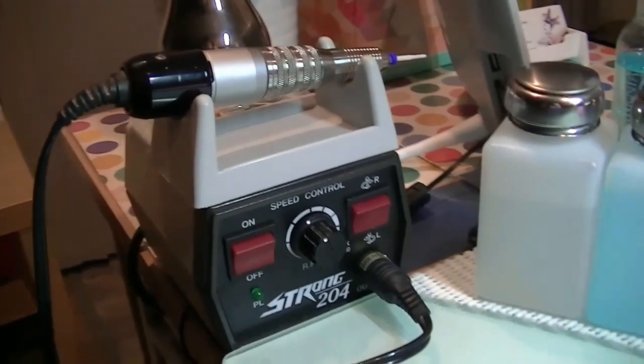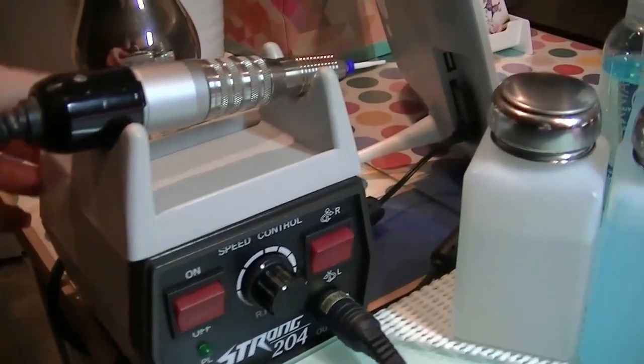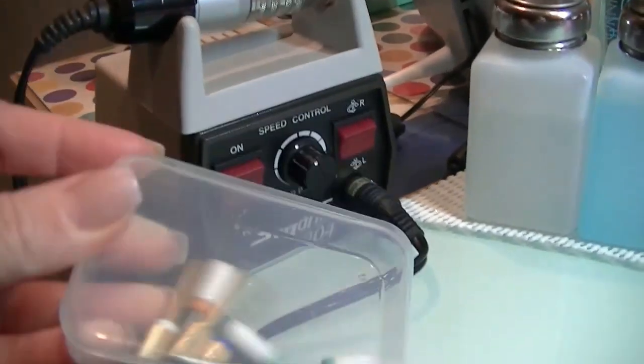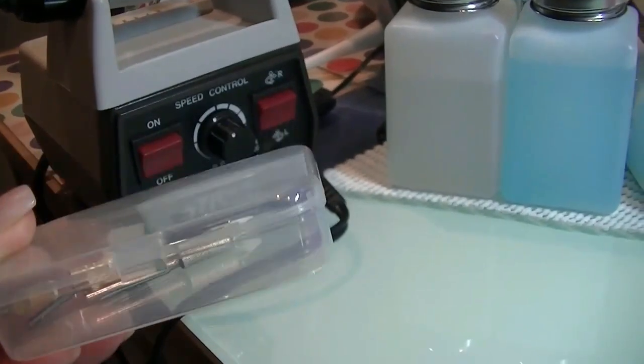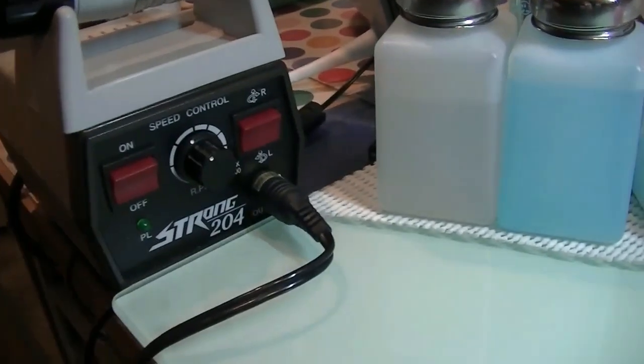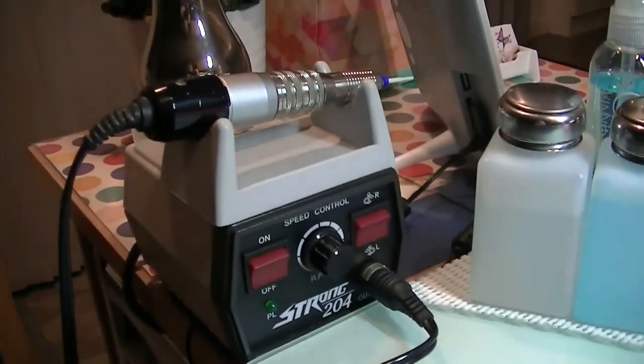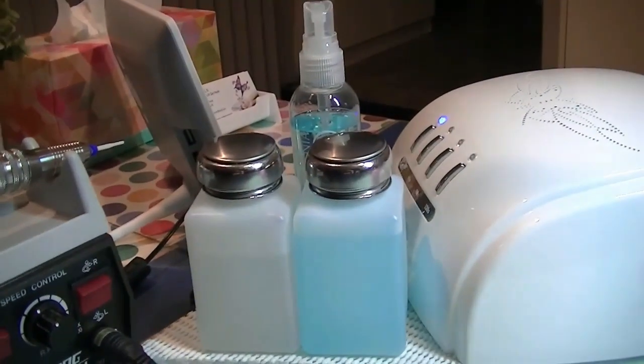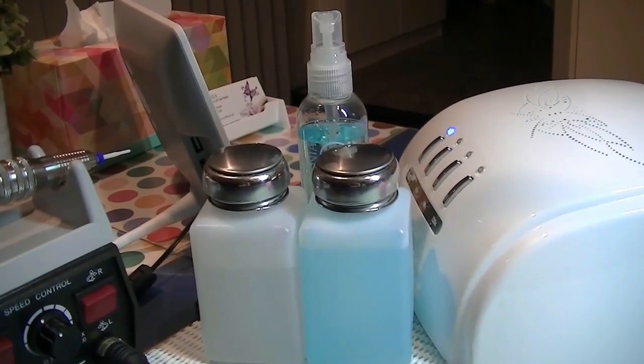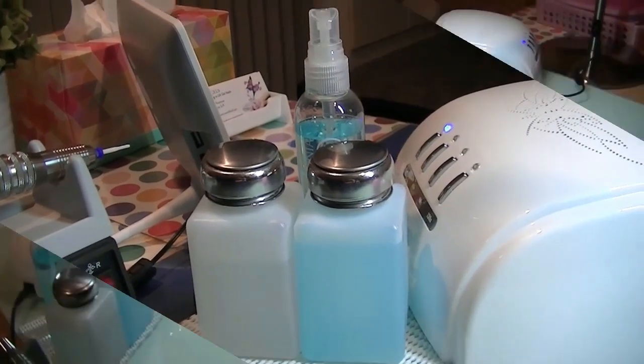This is my e-file. The brand is Strong. I don't believe it's available anymore, however it's the same as the Micro NX. This is the little container that I keep all my sanitized drill bits in. I also have handy pump bottles of acetone, isopropyl alcohol, and a spray sanitizer on my desk.